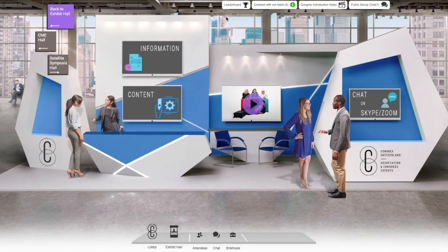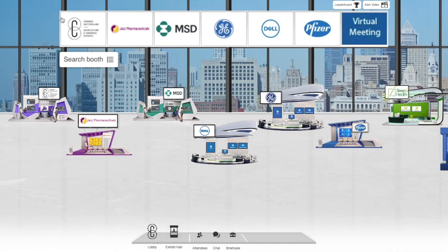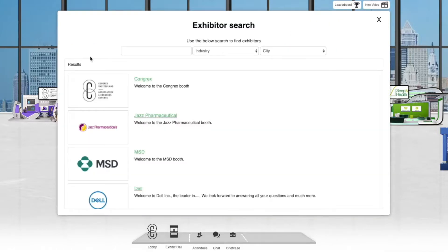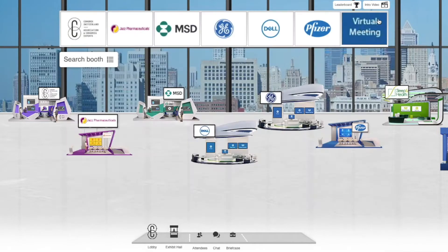From the lobby area, there's clear signage so you can easily find your next destination. In the exhibit hall, you will see booths of various sizes. The size and complexity of your booth depends on your sponsorship level. You can search by booth name, making it easier to navigate. Main sponsors can additionally be placed on the screens above, which will remain in the same position always.